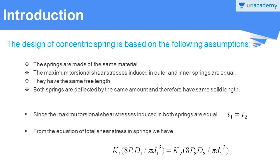The springs are made of the same material and the maximum torsional shear stresses induced in the outer and inner springs are equal. They have the same free length, which means the length of the springs when there is no loading acting on those springs. Both springs are deflected by the same amount and therefore have the same solid length.